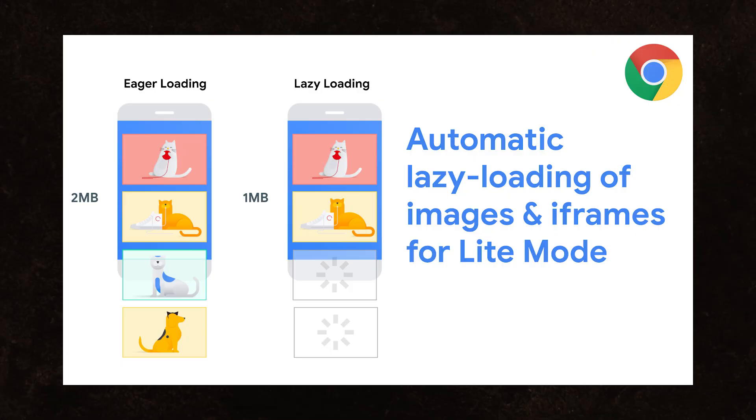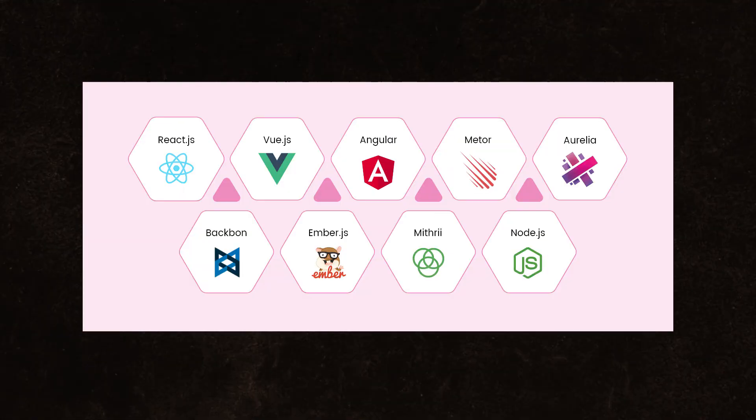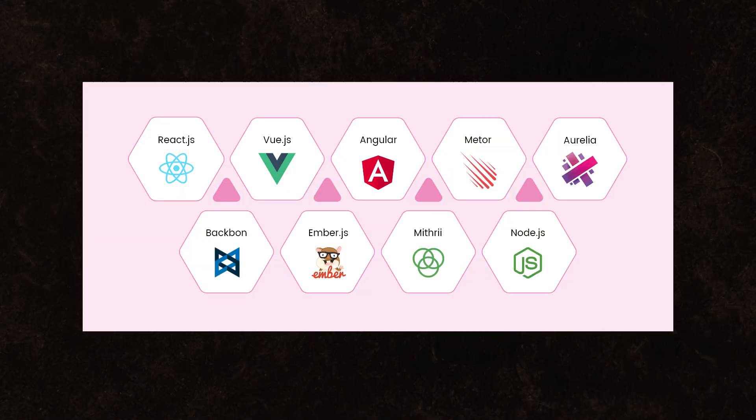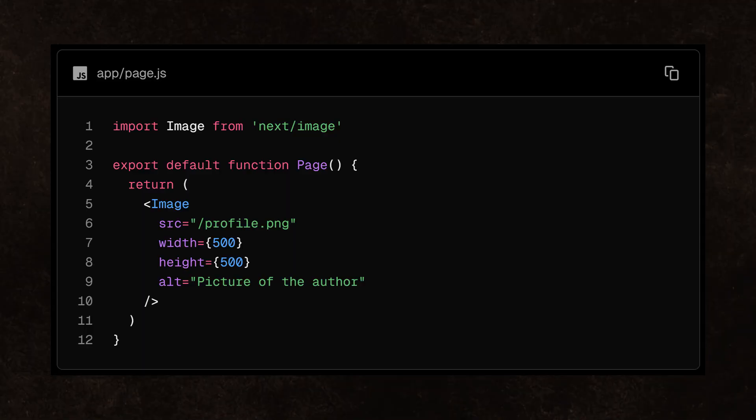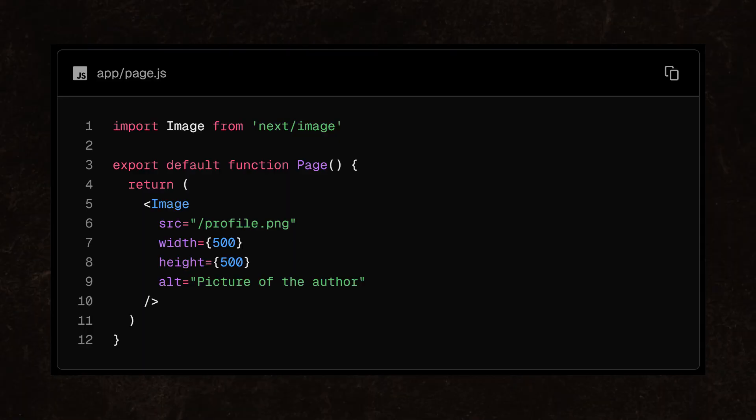Once your image is on your site, optimize it with lazy loading or your framework's dedicated image handler if it has one — for example, Next Image.